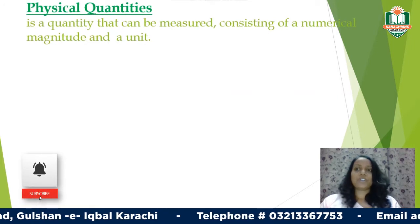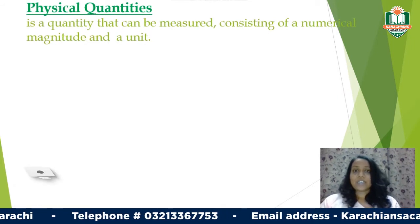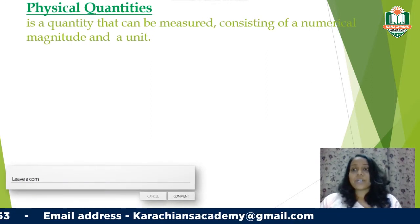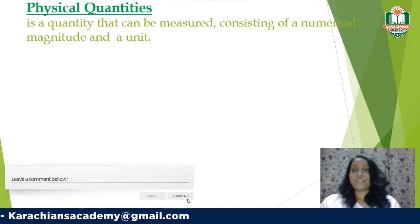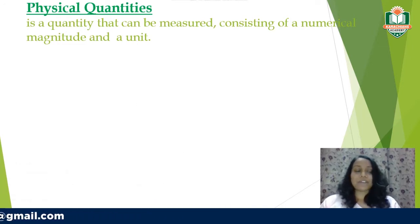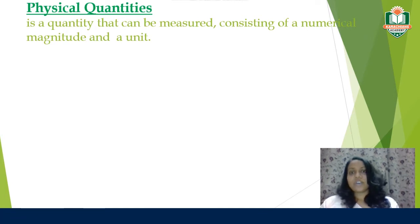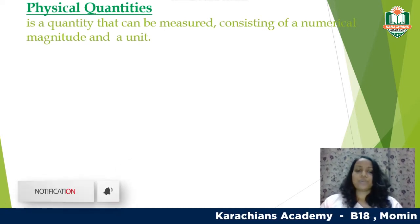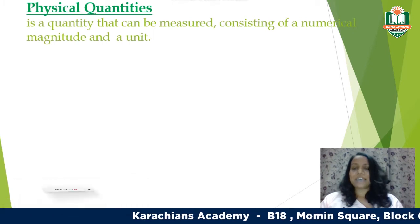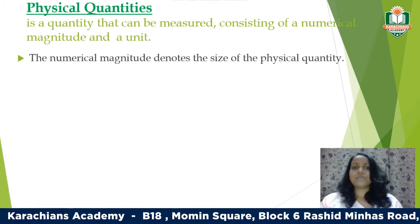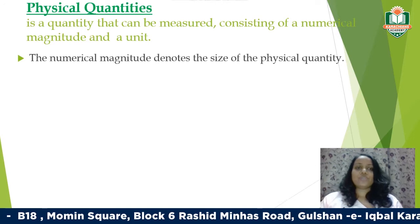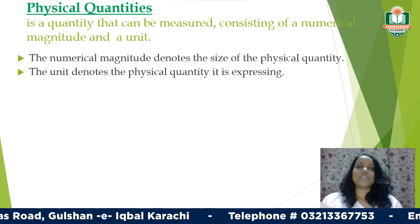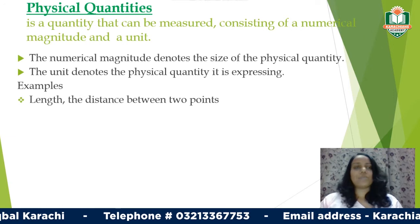The first terminology is: what is a physical quantity? There are two terms — physical and quantity. Physical refers to anything you can see, touch, or feel, and quantity is something that can be measured. So a physical quantity is one that can be measured, consisting of a numerical magnitude and a unit. The numerical magnitude is the number value, and the unit denotes what physical quantity is being expressed.